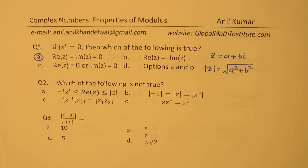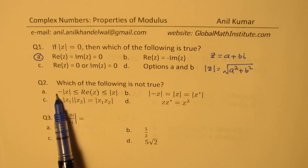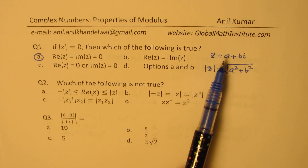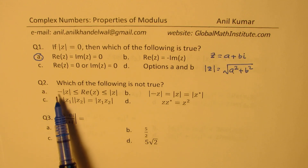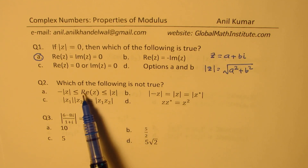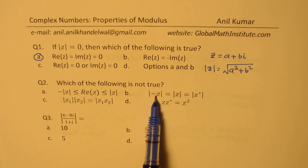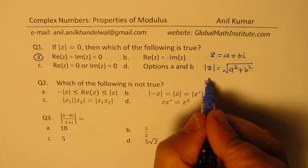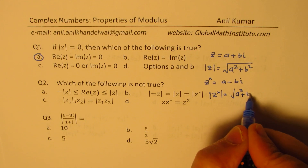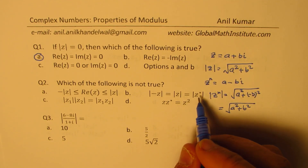Question number two is: which of the following is not true? The real value of a complex number is greater than or equal to minus the modulus of z, and less than or equal to the modulus of z. The real value here is a. It is always positive, so it is definitely greater than the negative value. On the other hand, the modulus has a positive b squared attached to it, so modulus of z is also greater — that is true. Now let us look into the second part, where we have modulus of minus z and conjugate. The conjugate will be a minus bi, and its modulus will also be square root of a squared plus b squared, which is the same, so part B is also correct.